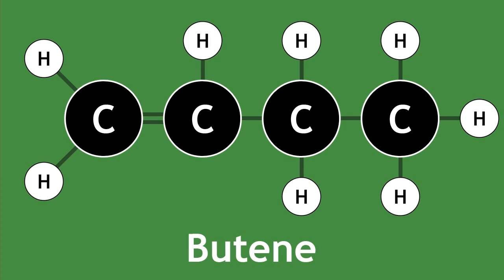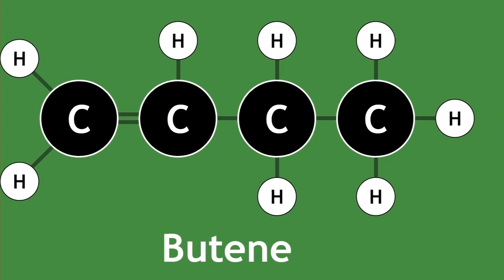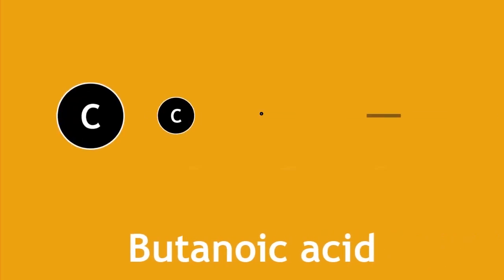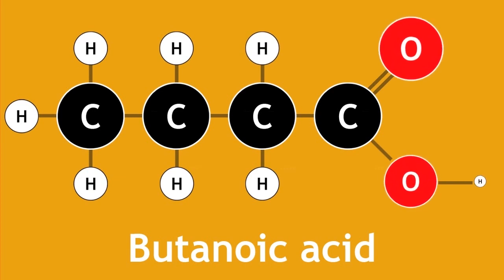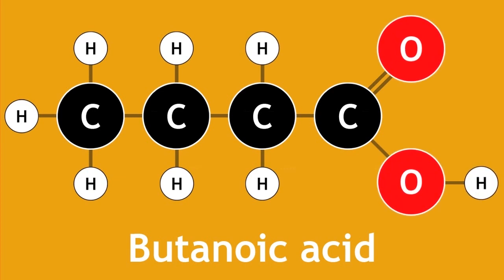Drawing all the bonds for very common molecules can be quite repetitive. For example, here is butanoic acid in its displayed formula. Since this is a common molecule, and as chemists we are clear with the bonding arrangement of carboxylic acid functional group,